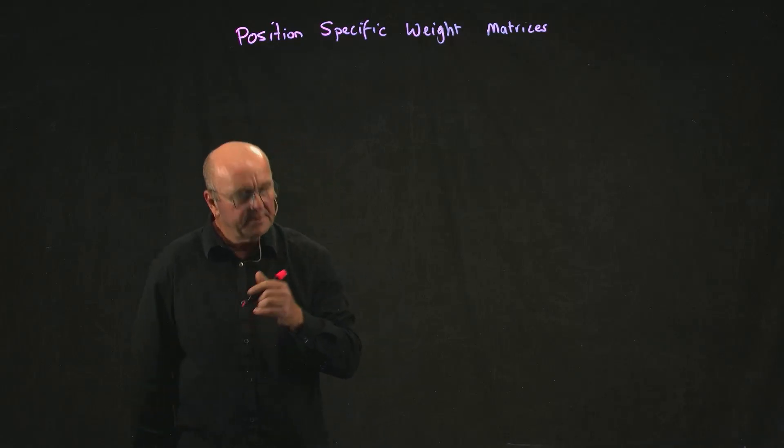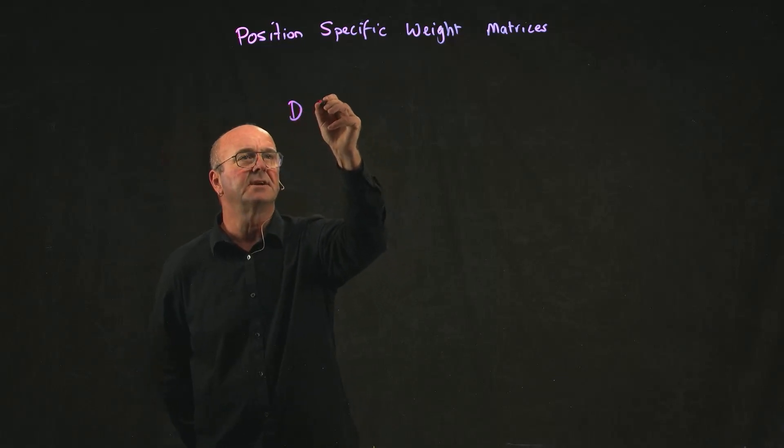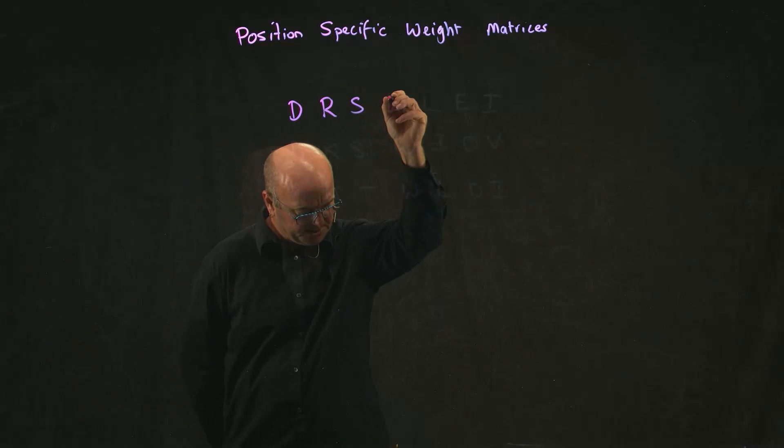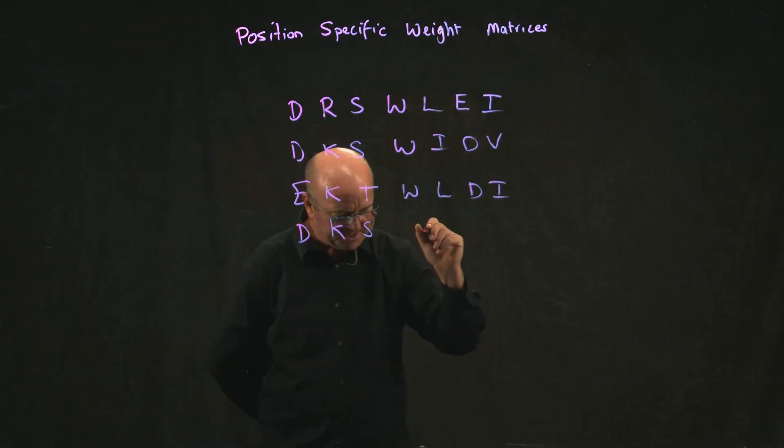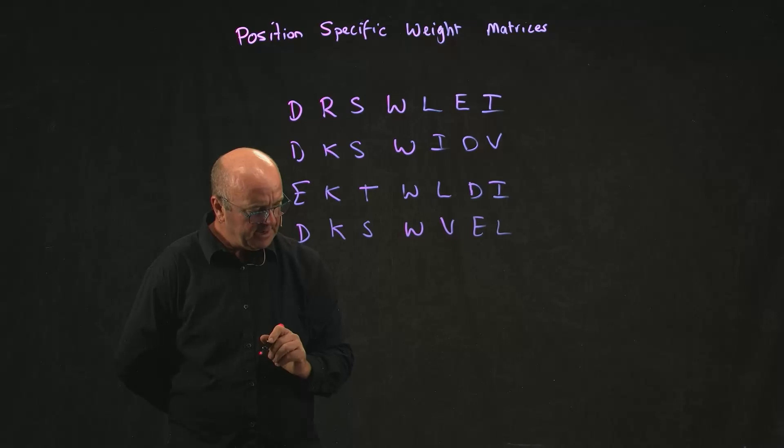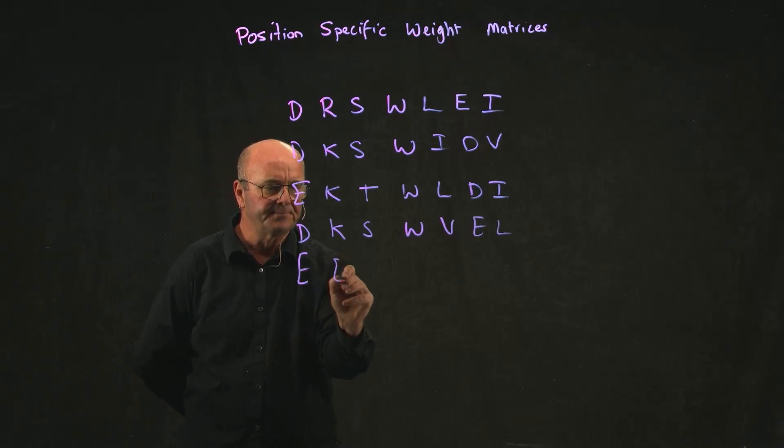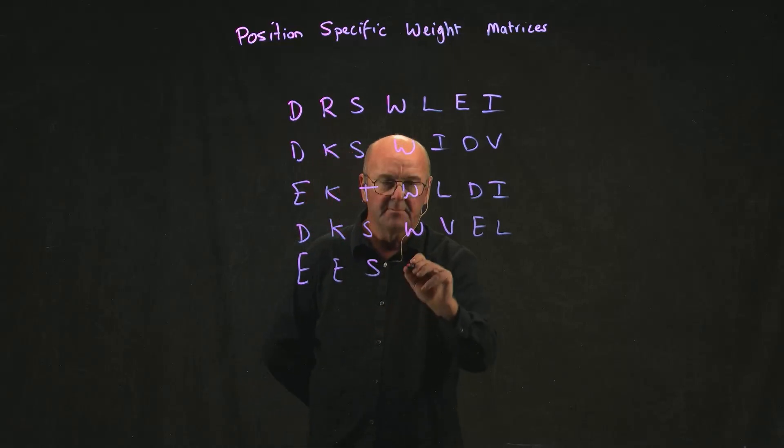For example, let's look at an alignment of a set of proteins. Here I've got just a short little polypeptide sequence. I've searched this polypeptide sequence and found five examples in the database. I'm going to build a position-specific weight matrix based on these five examples.